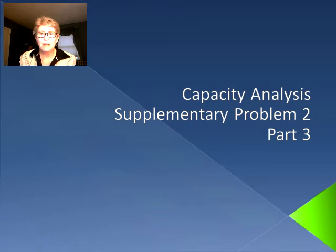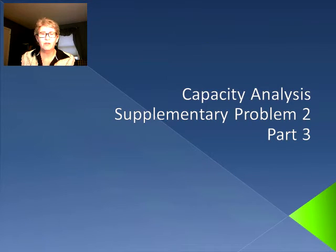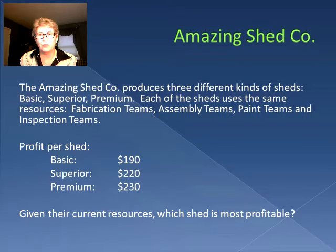Hello again and welcome back to operations management. We are in capacity analysis, working on supplementary problem number two, and this is our last part. As you recall from the previous parts, we were working with the Amazing Shed Company that produces three different kinds of sheds: the basic, the superior, and the premium.